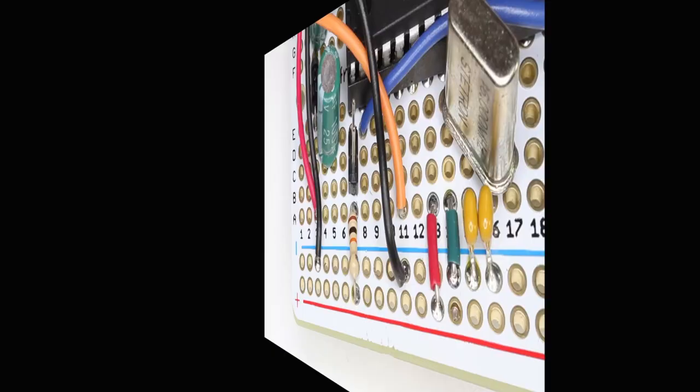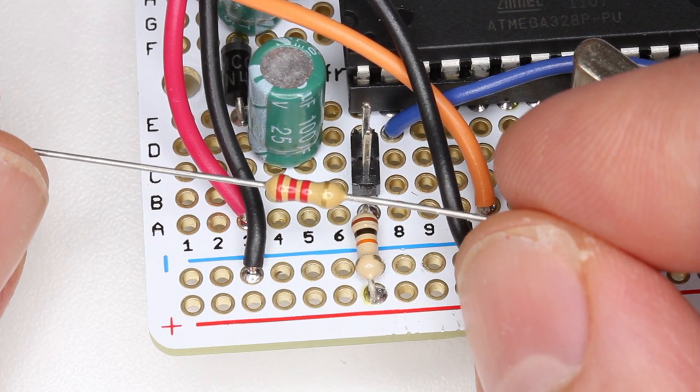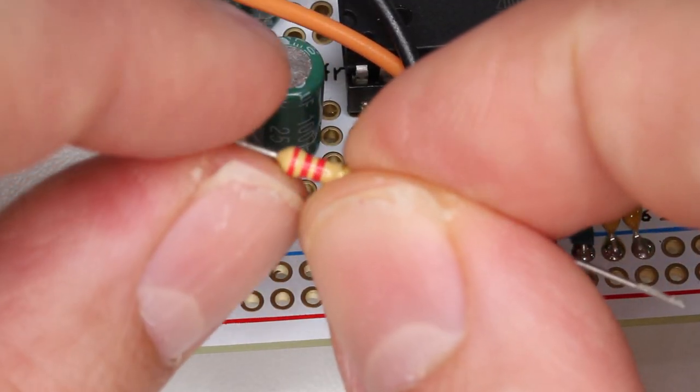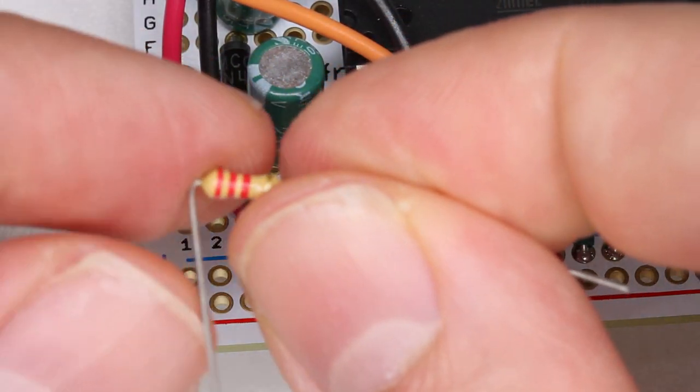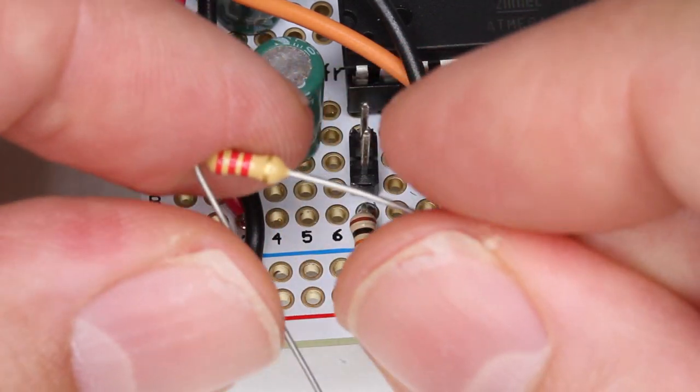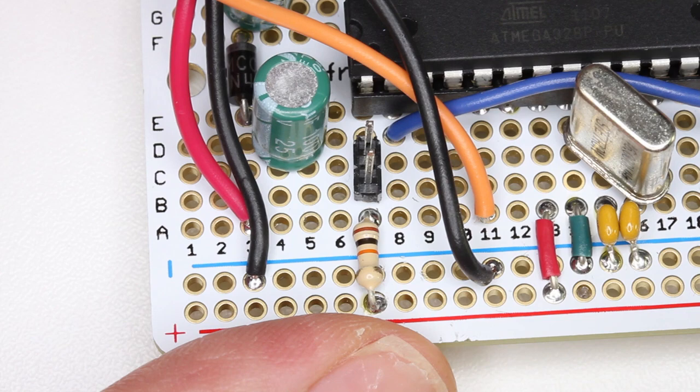Now we'll install the 2.2k resistor. We're going to install this part in an upright position, so take one of the leads and bend it right over. The resistor will be installed using these two holes.